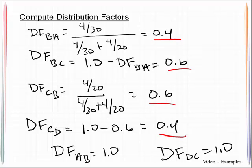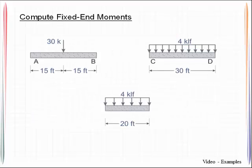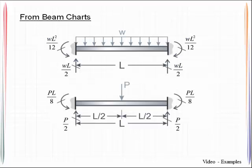So we have the distribution factors. Next thing is to compute the fixed end moments. Remembering that these are all fixed now. We have the known loads and we have the known span lengths. So what we will do is we will look to beam charts to identify what those factors should be.